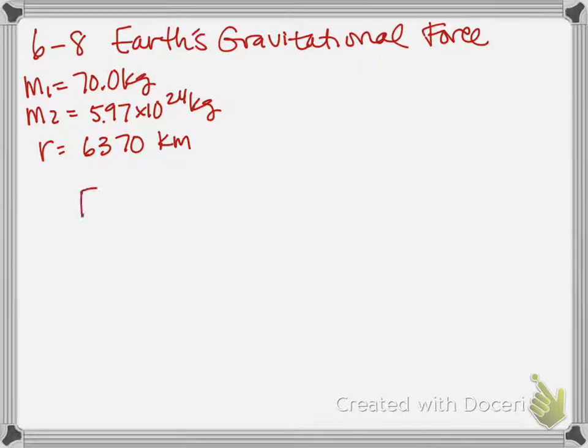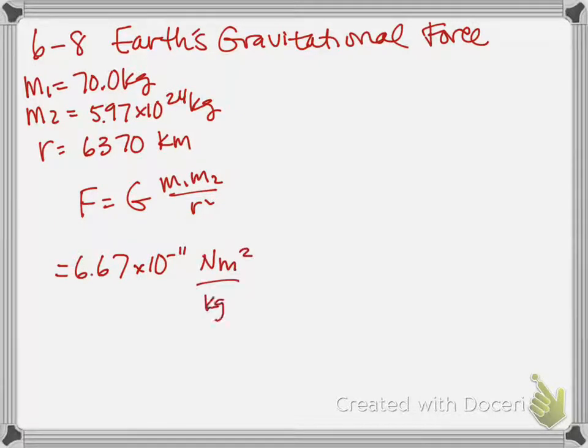So, going back to F equals G M1 M2 over R squared. That was messy, I apologize. So, we have the universal gravitational constant, 6.67 times 10 to the minus 11th newton meters squared per kilogram squared.